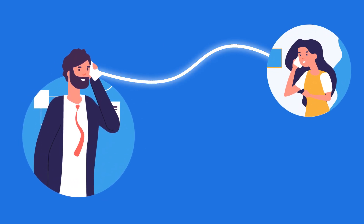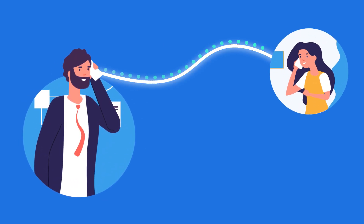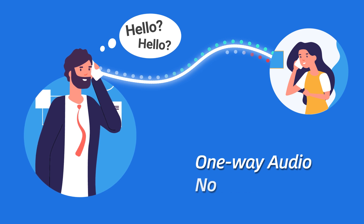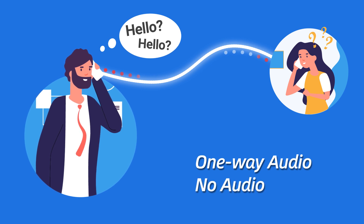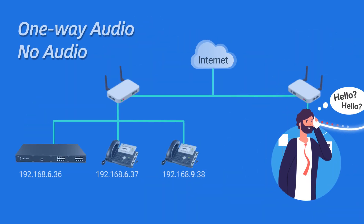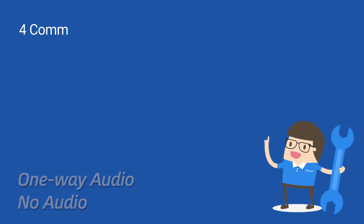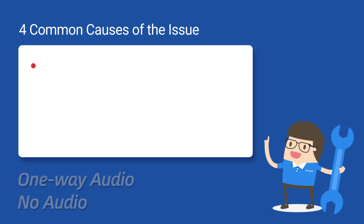When a remote extension is in a call, there is only one-way audio or even no audio. The same problem will also happen over an extension in a different network segment from the PBX. Generally, there are four common causes of this issue.